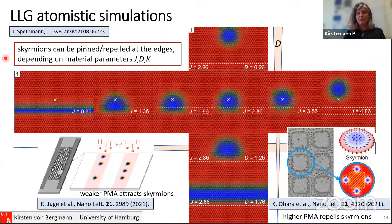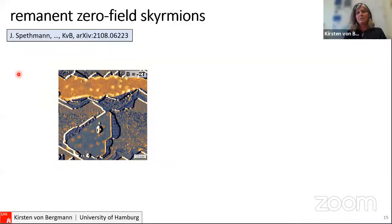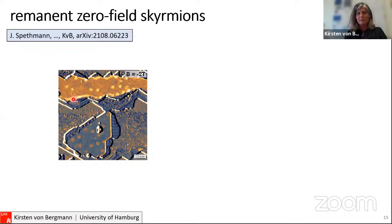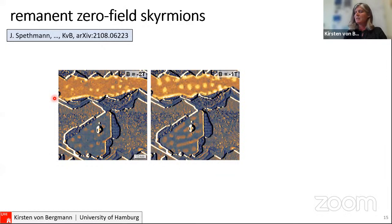Going back to the experiments in magnetic field at two tesla, we have some skyrmions in the interior and elongated objects at the rim. When we release the magnetic field, the skyrmions grow in size and are repelled by the edge, remaining as skyrmions even at zero magnetic field. This is one way to have zero-field magnetic skyrmions in the remnant state.